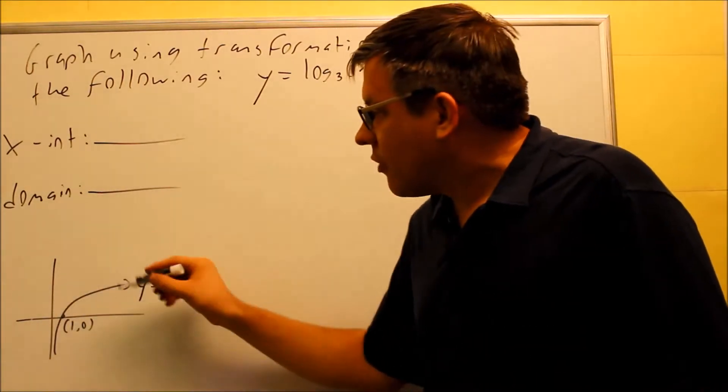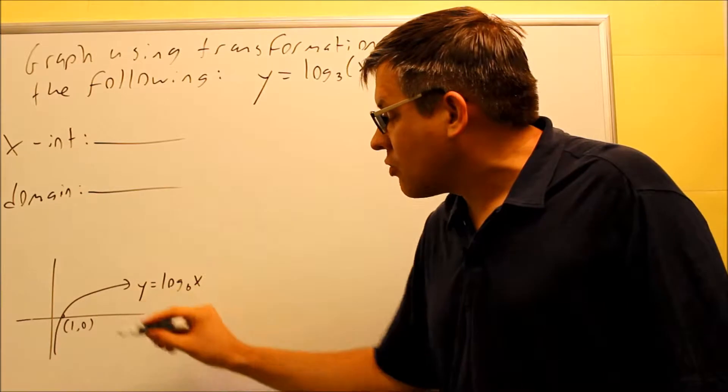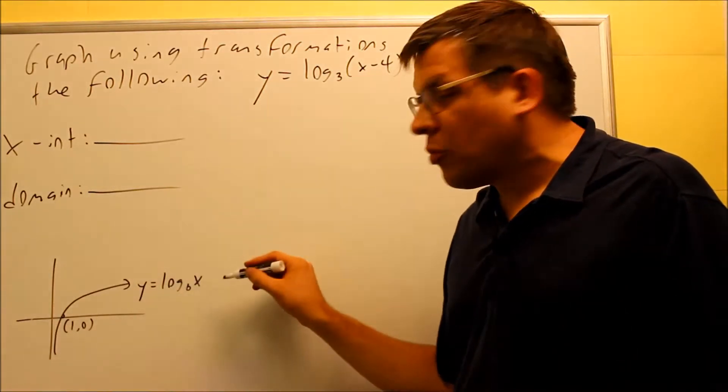So we drew the inverse, it's reflective about the line y equals x, and we got this one as a result. So this is what our normal graph looks like.